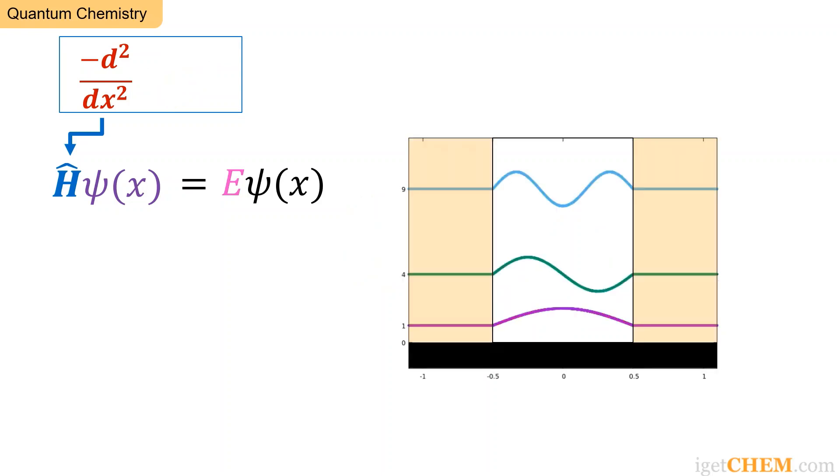But this time, we will restrict the solution to be zero everywhere outside of x equals plus minus 0.5. This requirement is represented by the orange shaded regions in the graph. The eigenfunctions must be zero in these forbidden regions.